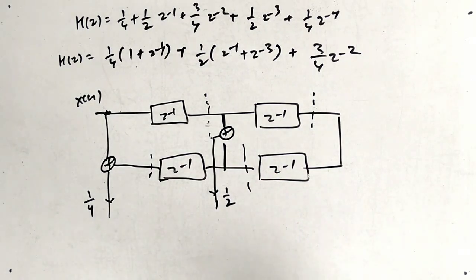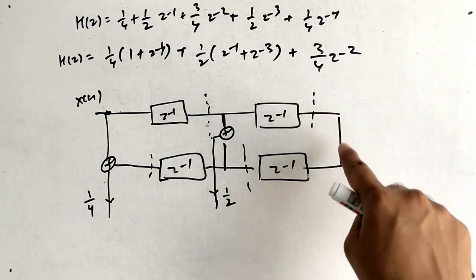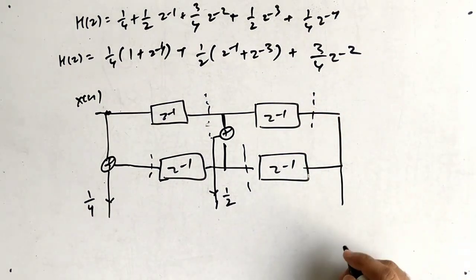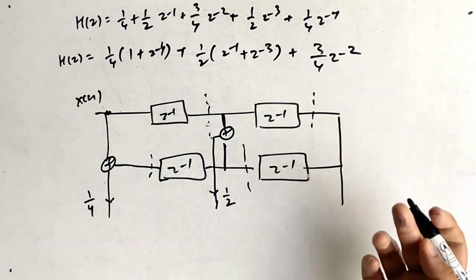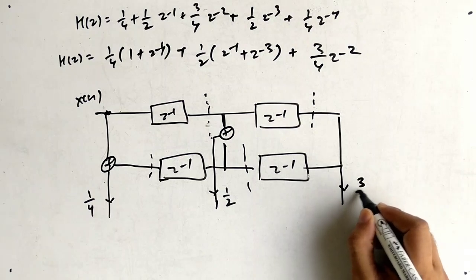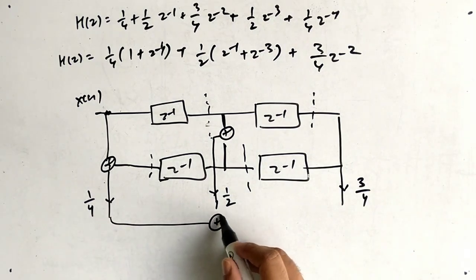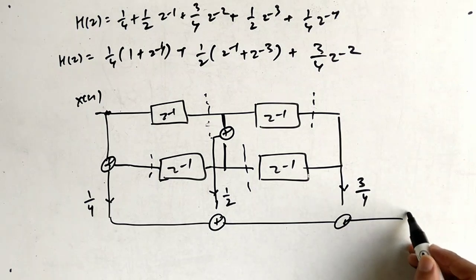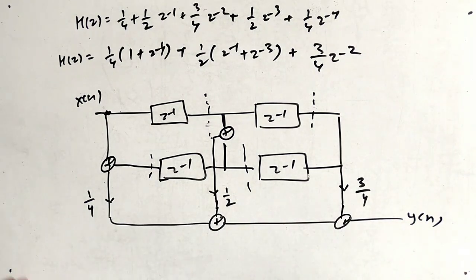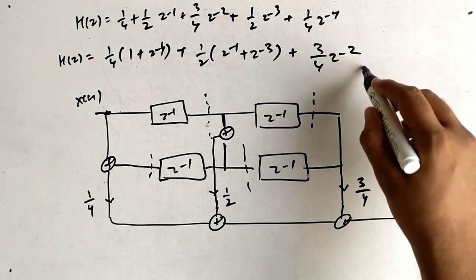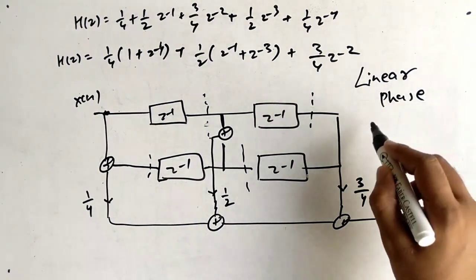The last term is z⁻², so take the line from the z⁻² area and apply multiplier 3/4. Now add all three branches together to get y(n). This is the complete linear phase realization, which saves multipliers compared to the direct form.